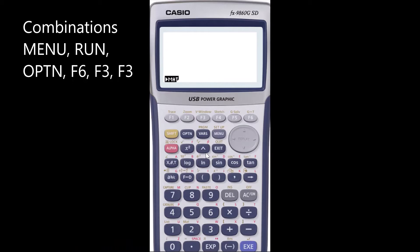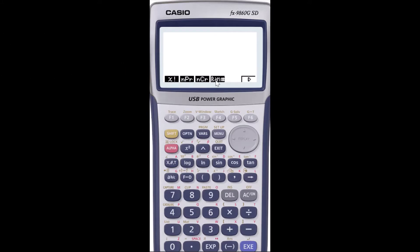So we'll quickly have a look at combinations. If I go option F6, F3, I've got x factorial, permutations, combinations and random number. So if I go 5 combination 0, gives you 1.